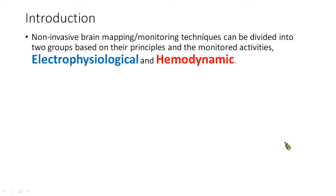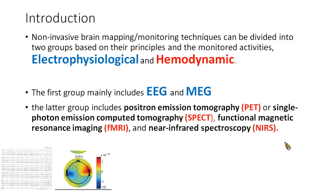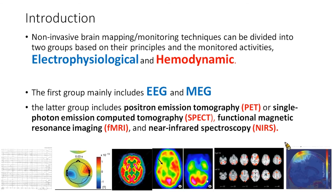For a long time, people tried to find a convenient and reliable technique to understand brain activity. We can separate these techniques into two groups. One is electrophysiological, which includes EEG and MEG, and the other is hemodynamic, which most commonly includes PET, SPECT, functional MRI, and NIRS.